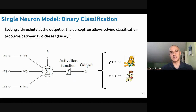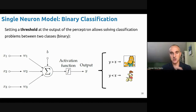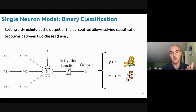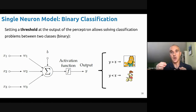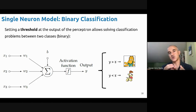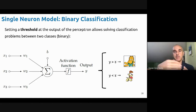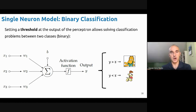With a sigmoid activation function — or actually with sigmoid plus a threshold — we can solve binary classification problems with a single perceptron. So with a single perceptron we can solve linear regression, logistic regression, and binary classification problems. Logistic regression is typically the step before solving binary classification, so you can think of them as essentially the same task.